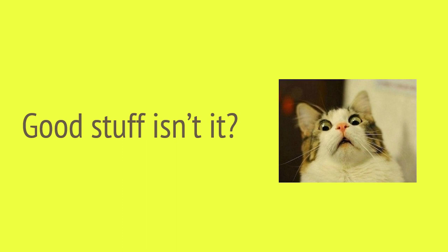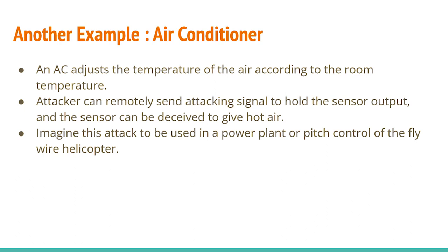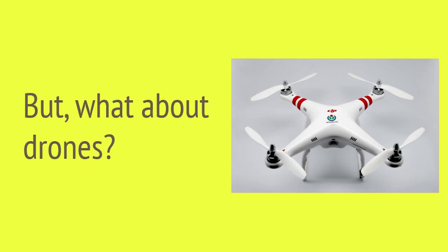Here's another example - an air conditioner adjusts the temperature according to room temperature. An attacker can remotely send an attacking signal to fool the sensor input, deceiving it to give out hot air. Imagine this attack used in a power plant, a nuclear reactor, or the pitch control of a fly-by-wire helicopter. Let's talk about drones.